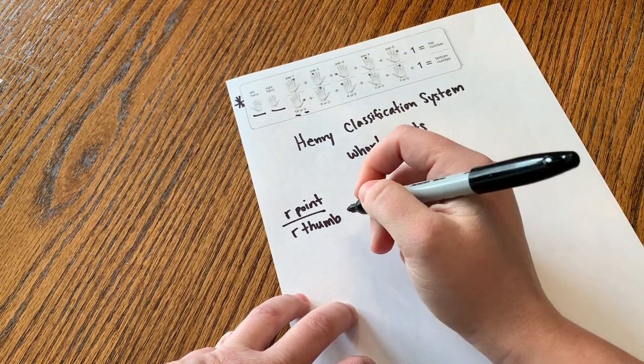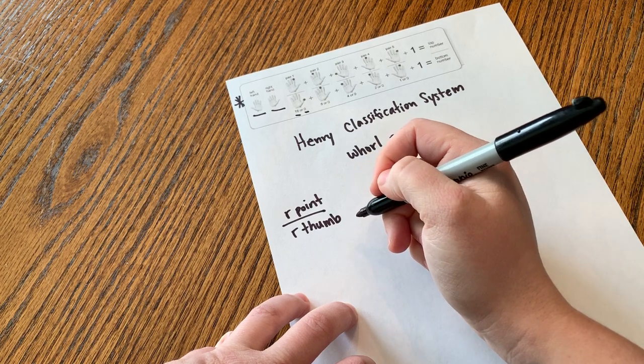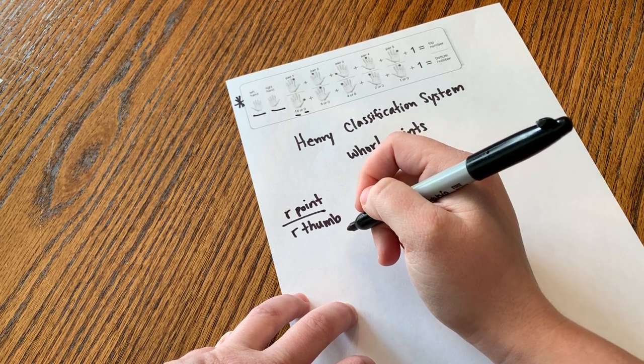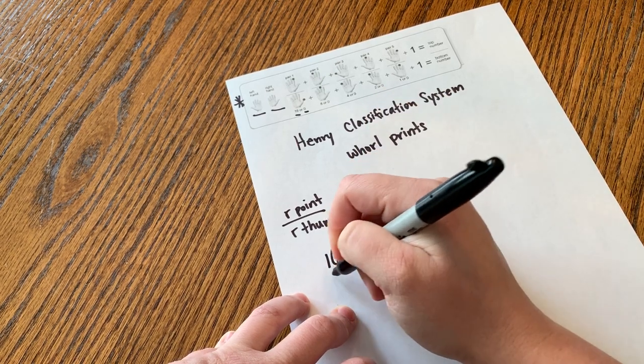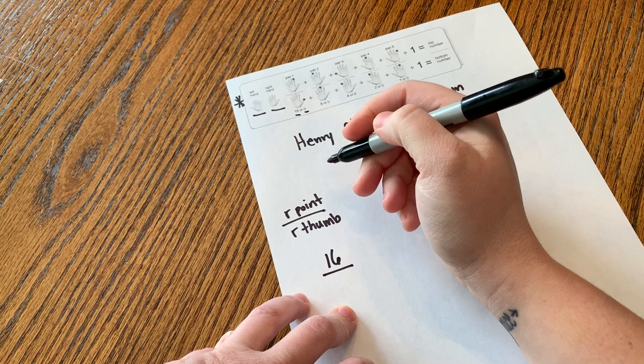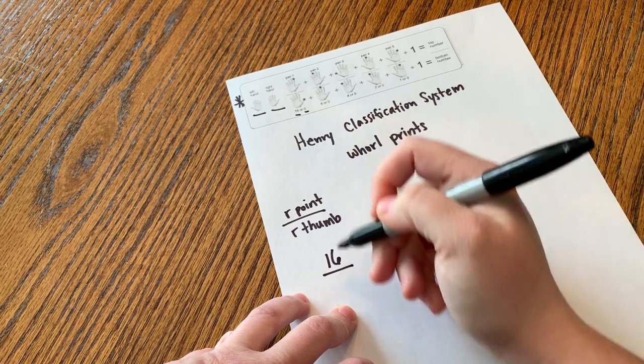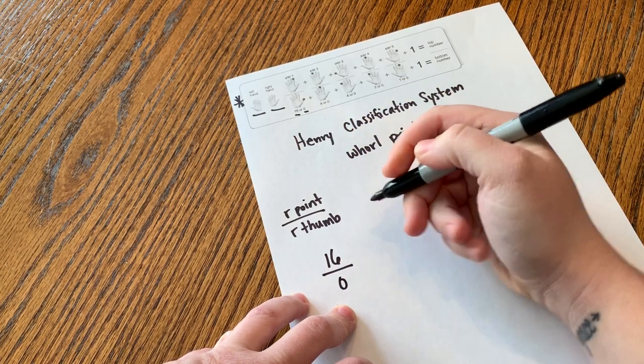Let's say our person has a whorl fingerprint on their right pointer finger. Then they're going to get a 16. And they don't have a whorl on their right thumb, so they're going to get a 0.